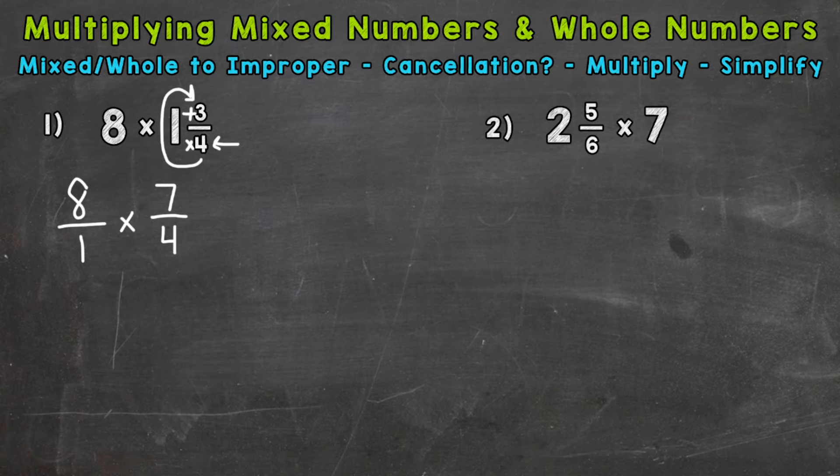This will help simplify the problem before we multiply. And in the case of number 1, we can use cross-cancellation. So you're looking for common factors between the numerators and denominators. For example, our 8 and 4 have a greatest common factor of 4. So we can divide both by 4. 8 divided by 4 is 2, and 4 divided by 4 is 1.